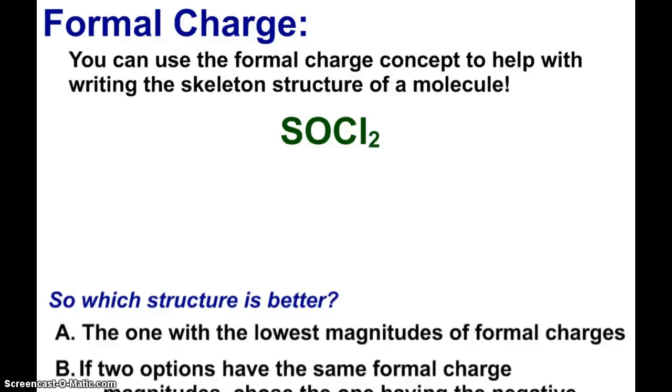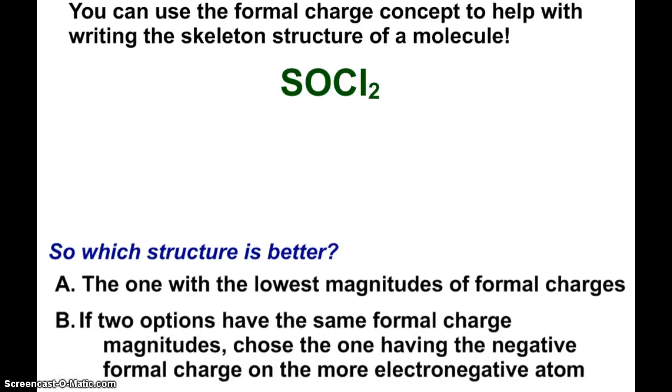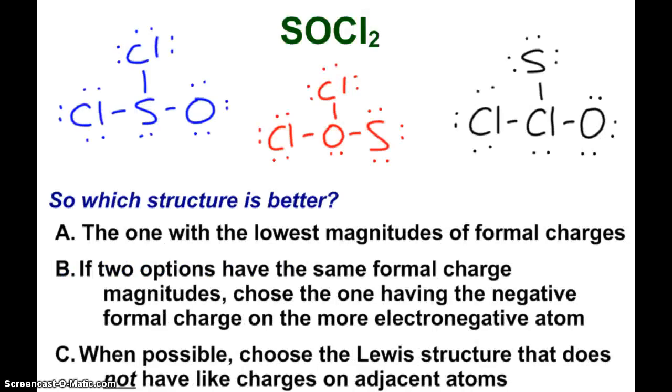We can also use formal charge to help with writing the skeleton structure of a molecule. So here we have SOCl2. And what we can do is figure out which skeleton is going to be better. So let me set up a couple skeletons for you to copy down. So here we have three possible scenarios: sulfur being the central atom, oxygen being the central atom, chlorine being the central atom. All three of these are obeying the octet rule. There's 26 valence electrons, six from sulfur, six from oxygen, seven and seven from chlorine. So what we can do is assign formal charges. And so when I do that, all of the single bonded chlorines, those are zero just like they were in the last example. They have seven valence electrons, one electron in the bond, six in the lone pair.